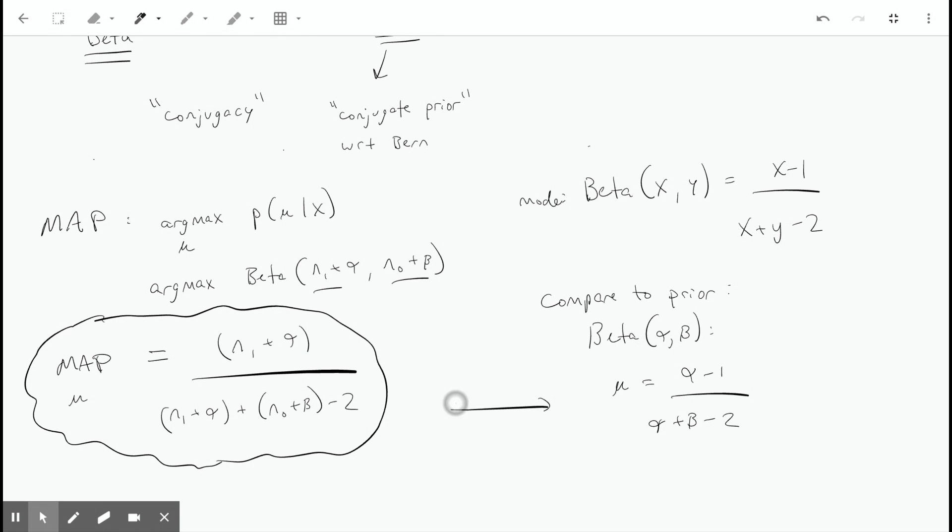When you compare these, you can see that clearly we've learned from our data. We're factoring in the number of ones and the number of zeros we saw in our Bernoulli coin flips. So we're clearly learning, and the advantage of the Bayesian approach is that you're also still grounded in some sense by your prior.